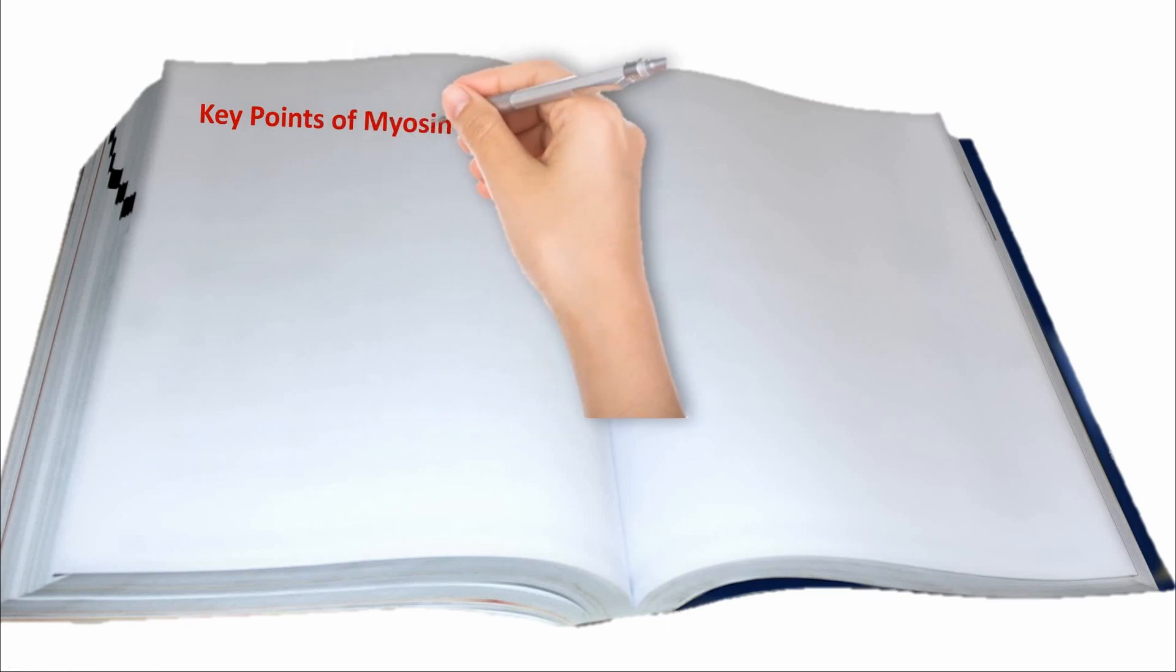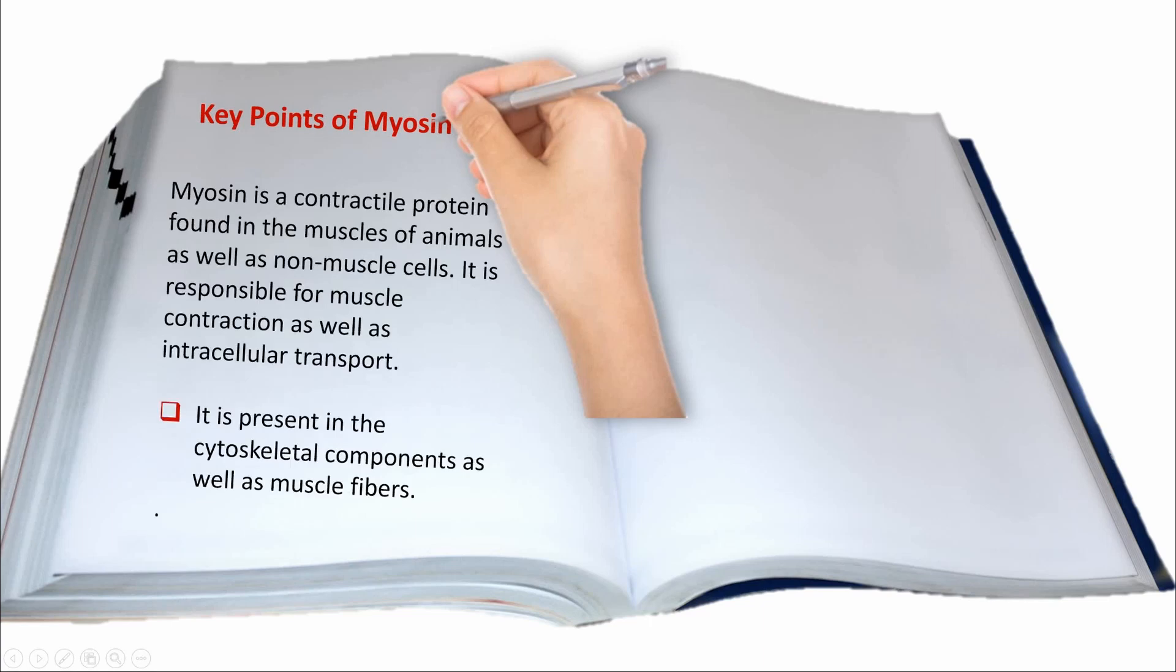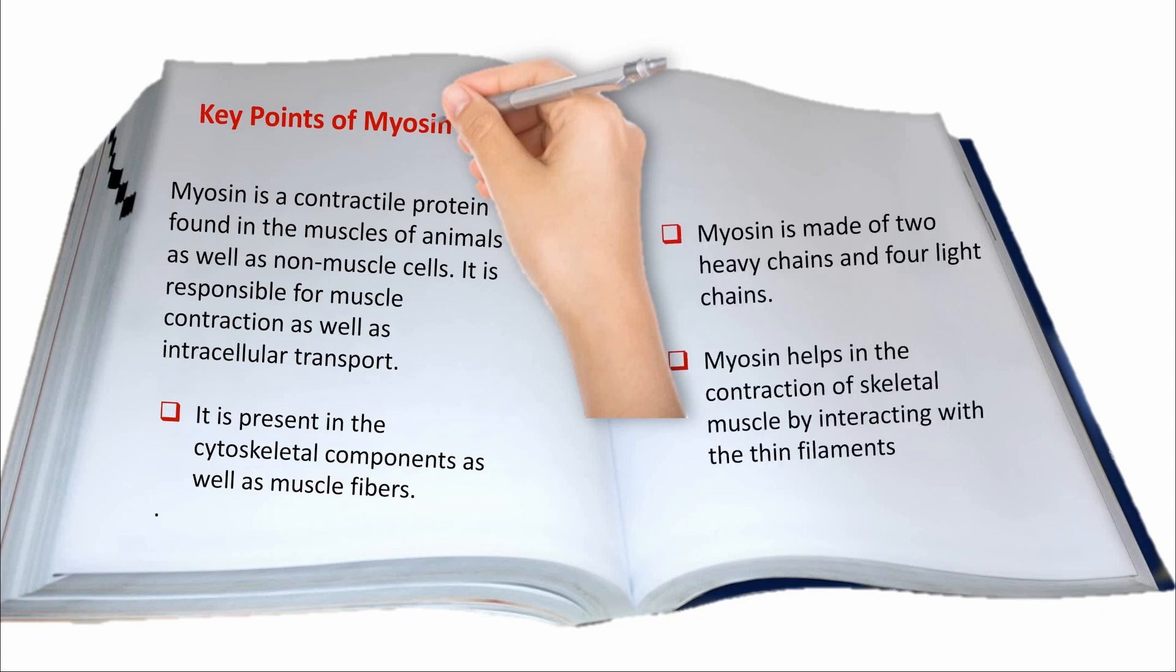Key points of myosin. Myosin is a contractile protein found in the muscles of animals as well as non-muscle cells. It's responsible for muscle contraction as well as intracellular transport. It's present in the cytoskeletal components as well as muscle fibers. Myosin is made of two heavy chains and four light chains, and myosin helps in the contraction of skeletal muscle by interacting with the actin filaments.